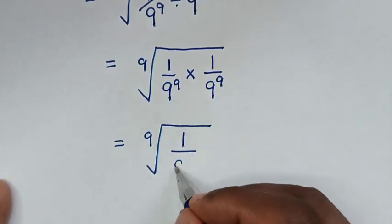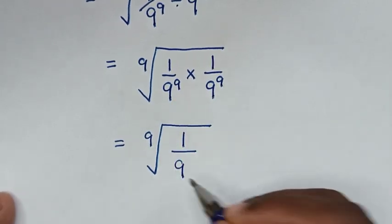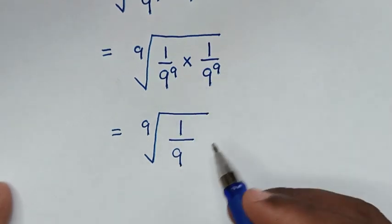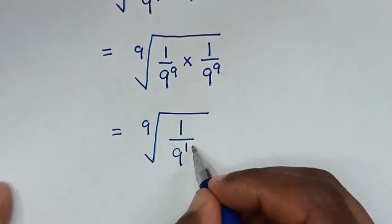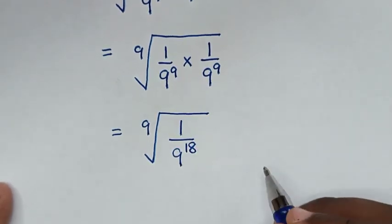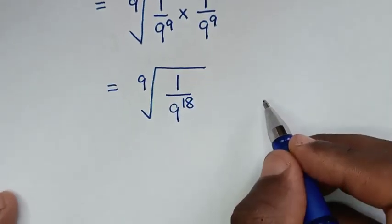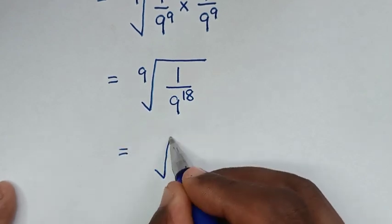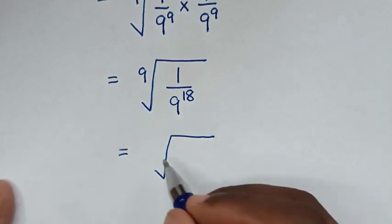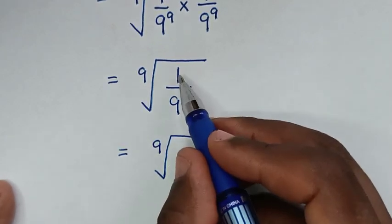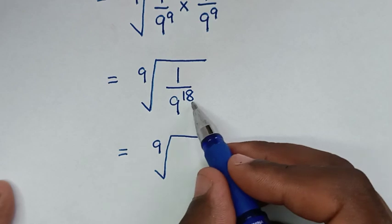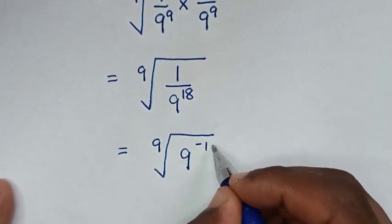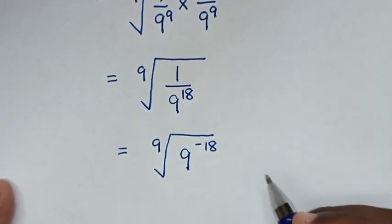Then it will be equal to the 9th root of 1 over 9 power of 18, which is the same as 9 power of negative 18.